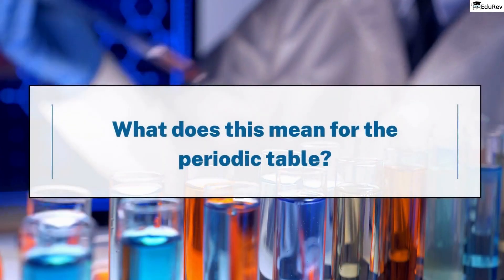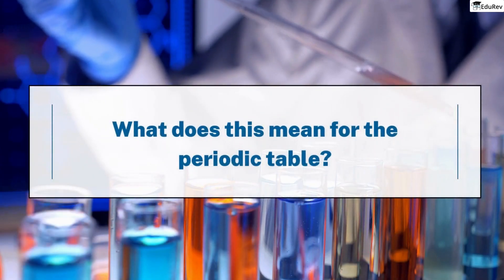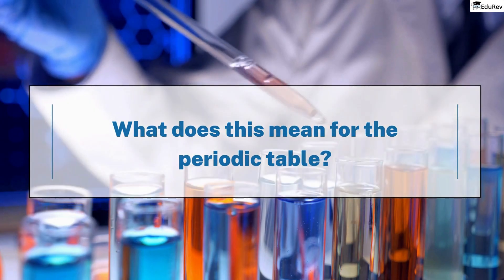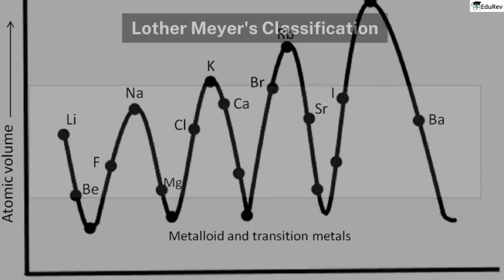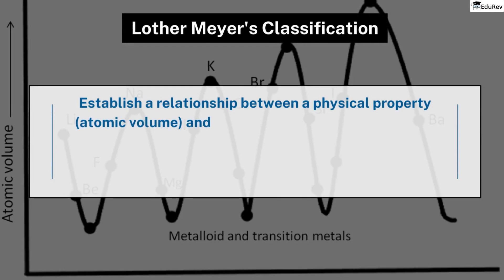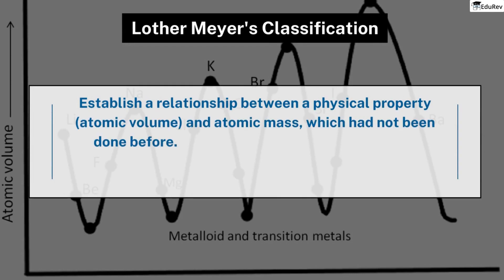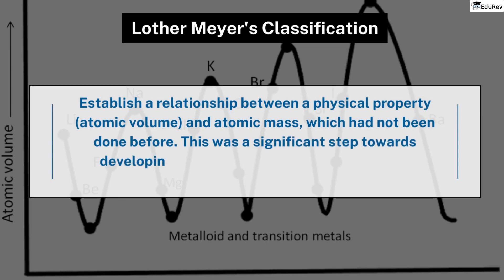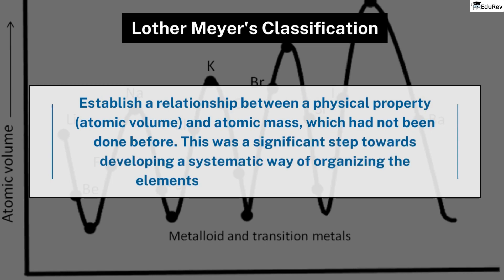You might be wondering what this means for the periodic table. Meyer's classification helped establish a relationship between a physical property — atomic volume — and atomic mass, which had not been done before. This was a significant step towards developing a systematic way of organizing the elements based on their properties.